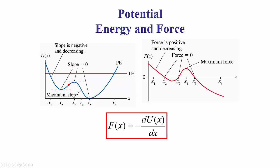With the potential energy graph shown, where we have a negative slope, that is where the force is positive. At x2 where the slope of the potential energy graph is zero, the force is zero. Between x2 and x3 where the slope is positive, the force is negative. At x3 the slope is zero, so the force is zero. From x3 to x5 the slope is negative, so the force is positive. At x5 the slope is zero, so the force is zero. From x5 onward the slope is positive, so the force is negative.